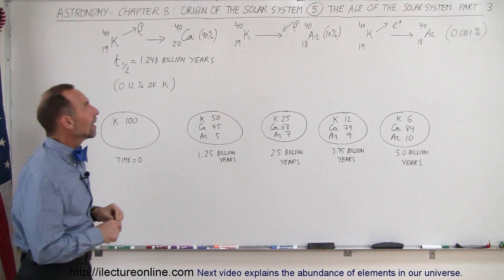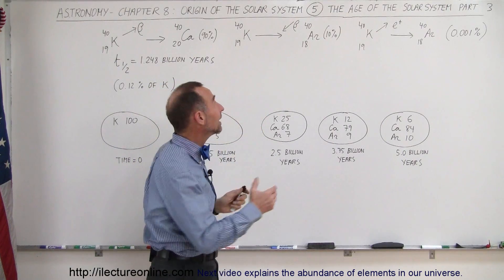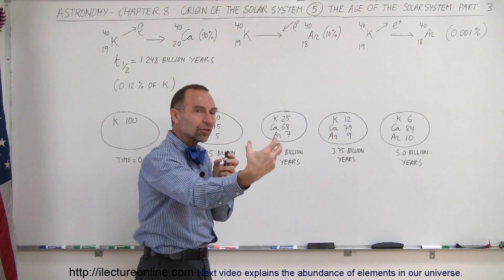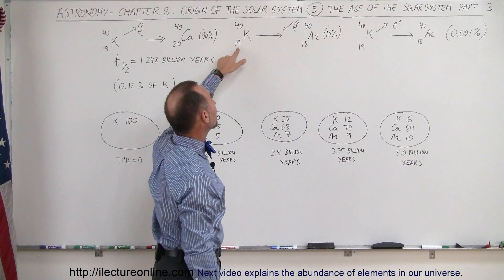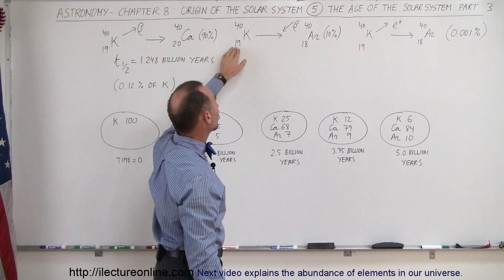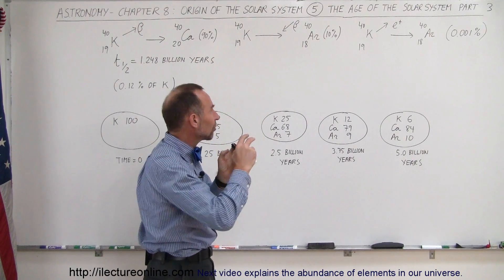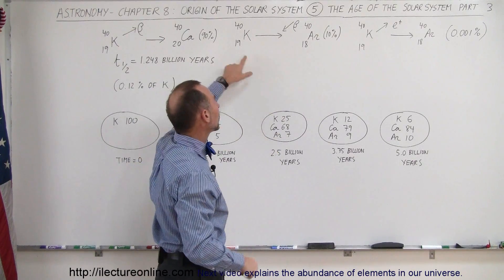10% of the time, the potassium decays in a different fashion. It decays by capturing an electron, by actually taking an electron and injecting it into its nucleus. One of the protons will capture the electron and turn itself into a neutron, a very unusual situation.